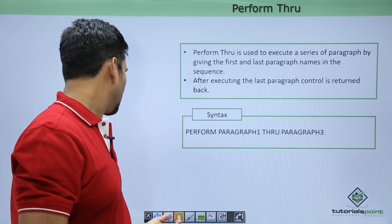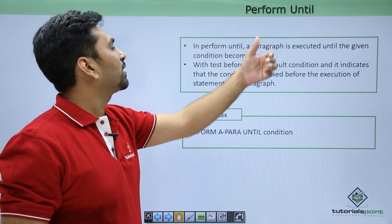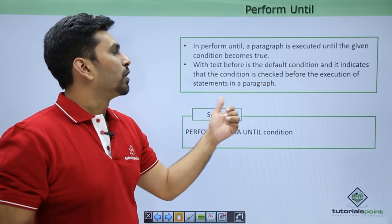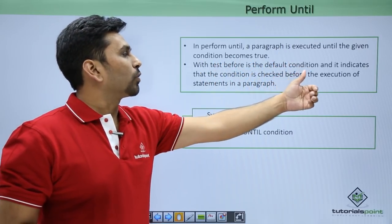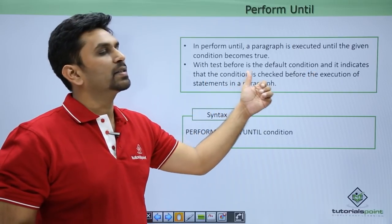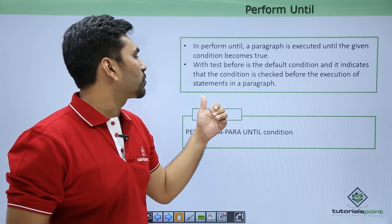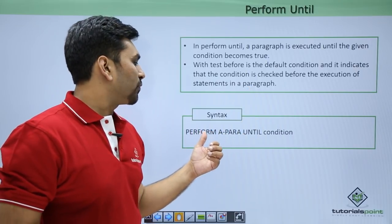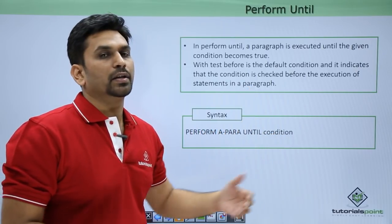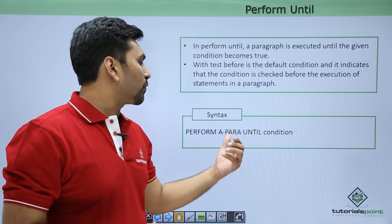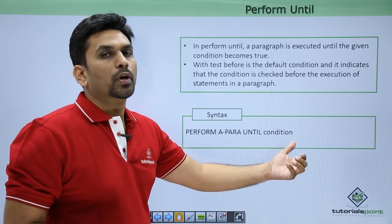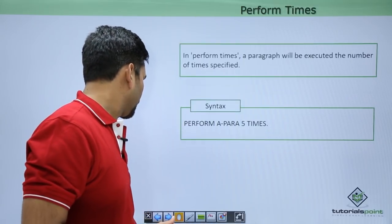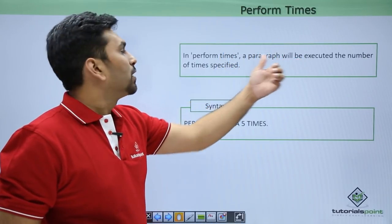In PERFORM UNTIL, a paragraph is executed until the given condition becomes true. TEST BEFORE is the default condition, indicating that the condition is checked before the execution of statements in a paragraph. The syntax is: PERFORM A UNTIL [any condition]. This paragraph will be performed until the condition becomes true, at which point it exits the PERFORM statement.